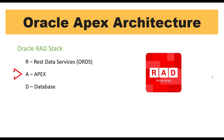The second one, A, stands for Apex. It is a low-code platform which we are going to learn in the further lectures. And finally, D is for the database, which is integrated with Oracle Apex and manages the backend part.